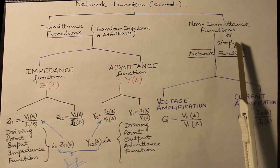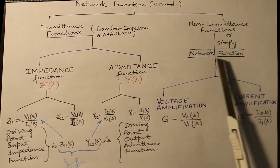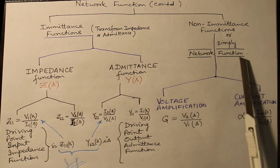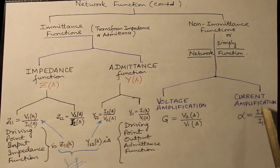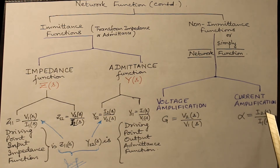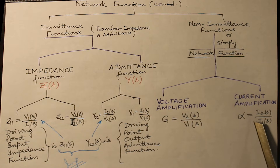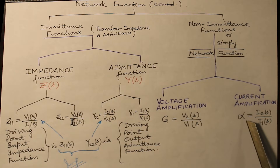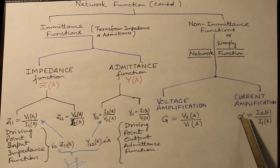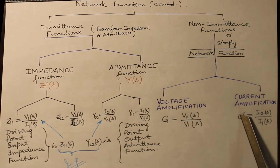Coming on to non-imittance functions, they are simply known as network functions as well. Under it, there are two terms: one is voltage amplification mu, where you have the ratio of output voltage to input voltage, and current amplification alpha, which is I2 over I1. Let us do a few numerical examples on voltage amplification and current amplification, making use of voltage division formula and current division formula.